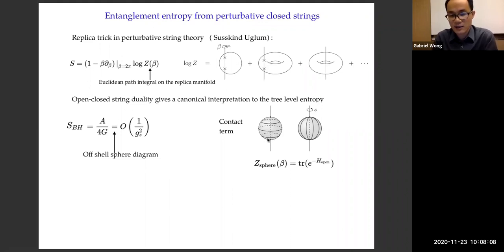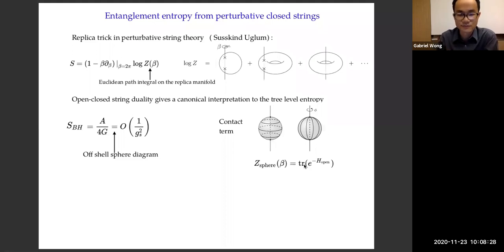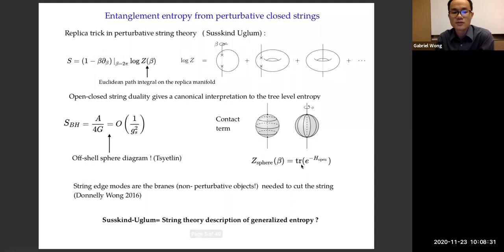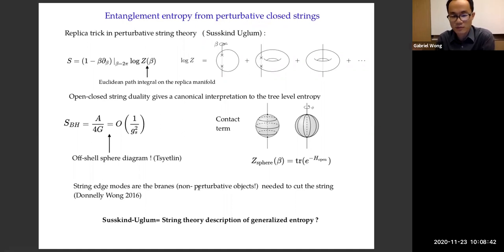Instead of thinking about a closed string that is emitted and absorbed, we should think about it as an open string that swings around in a one-loop fashion. This open string is like half of the closed string that's been hidden behind the horizon, or the half that is not hidden behind the horizon. In this open string channel, there seems to be a trace and a canonical interpretation. The string edge modes are some kind of branes that cut this closed string into open strings. Notice that even though we're studying closed string perturbation theory, when we want to cut the string, we have to introduce non-perturbative objects — the branes.